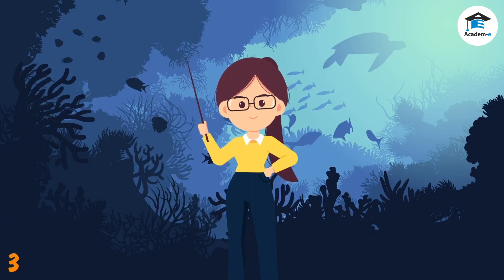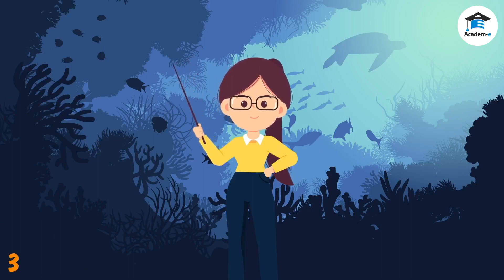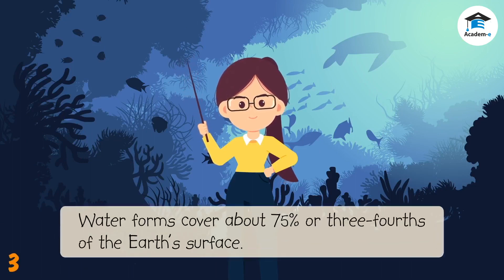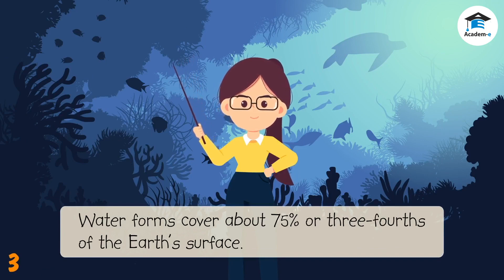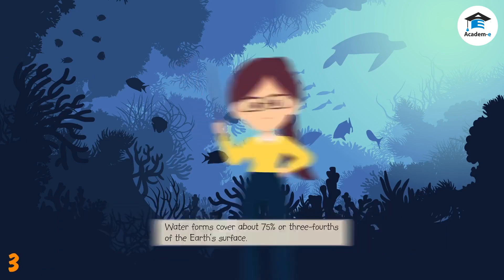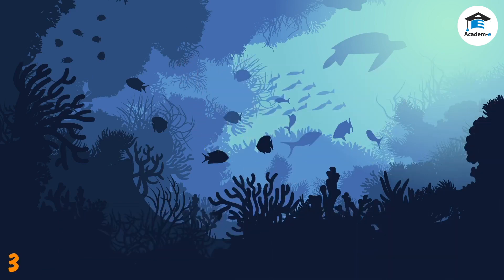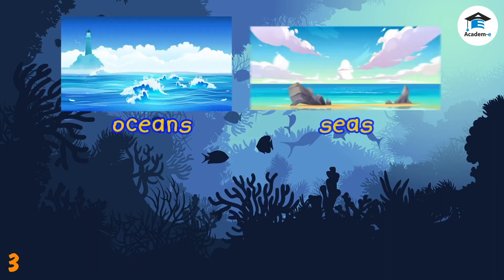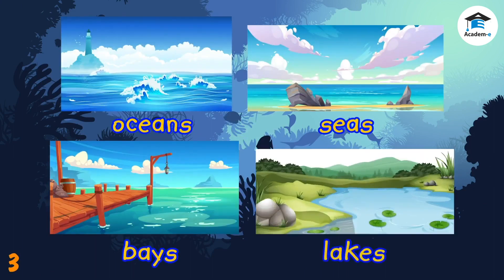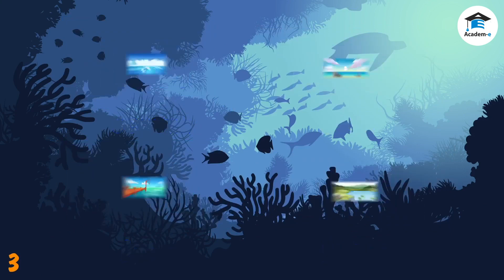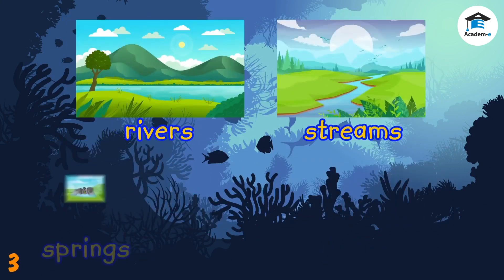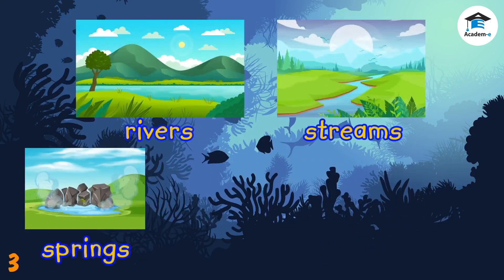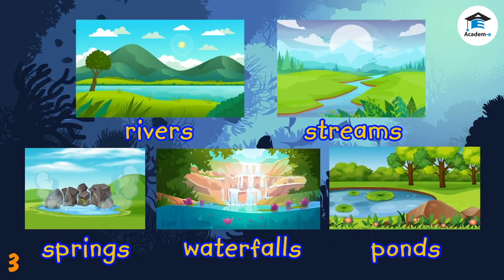Hello kids! You have learned about the different waterforms on Earth. Recall that waterforms cover about 75 percent, or three-fourths, of the Earth's surface. Bodies of water or waterforms include oceans, seas, bays, lakes, rivers, streams, springs, waterfalls, and ponds.